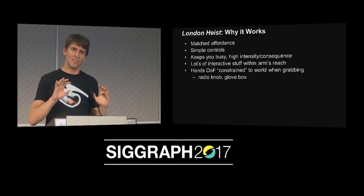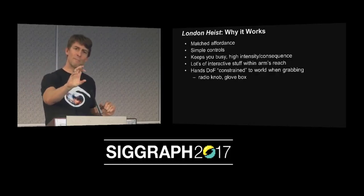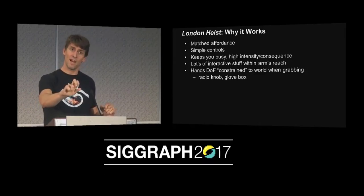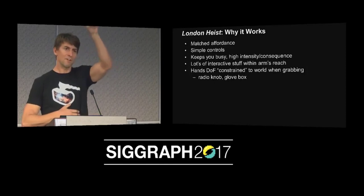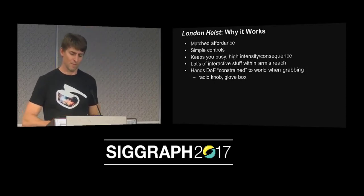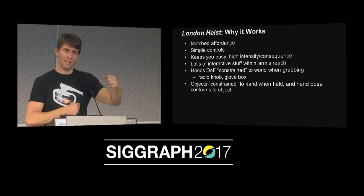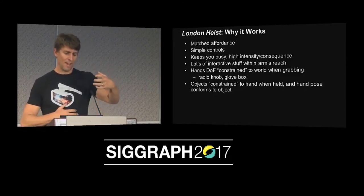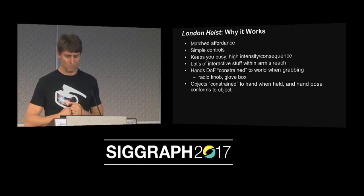When you go to grab the dial and turn it, your hand actually moves into the reference frame of the dial at that moment — it transitions seamlessly. Now all you can do with your hand while grabbing the dial is rotate; there's nothing else that hand can do except rotate on that one axis. Same thing when you grab the glove box or the thing above the windshield — after you've grabbed it, you're constrained to the degree of freedom that the thing you're grabbing has. However, when you grab a free object, the object moves into your hand and you still have one-to-one mapping of your hand, and the hand pose conforms around that object — they have to do special animations for each object, which is a little extra work, but gives a really great effect for interacting with things.